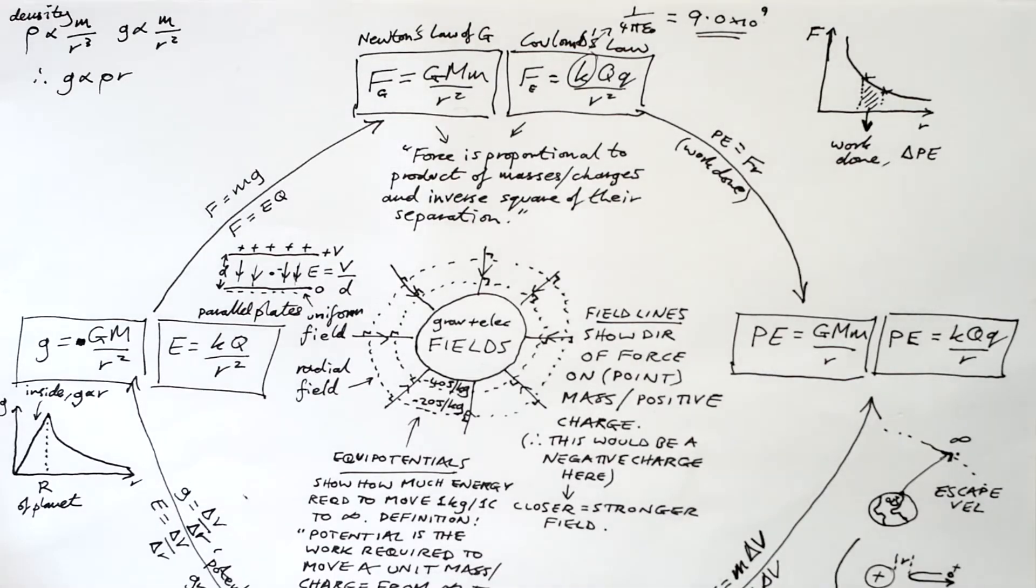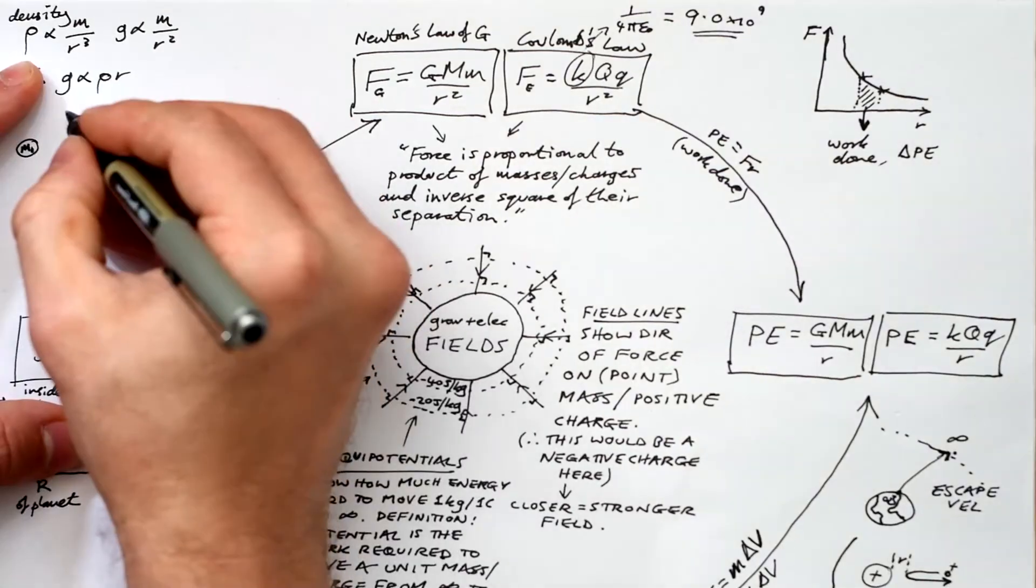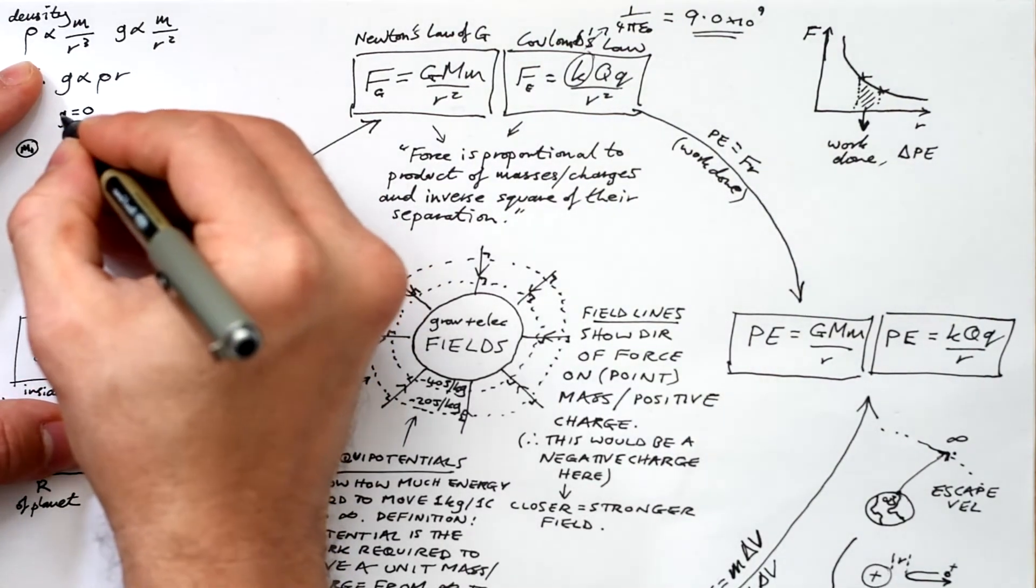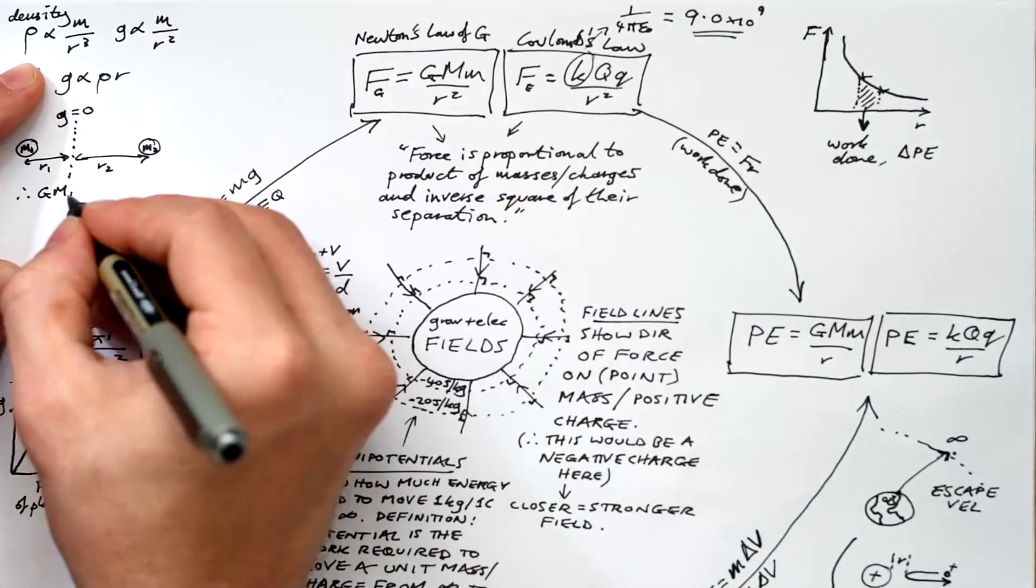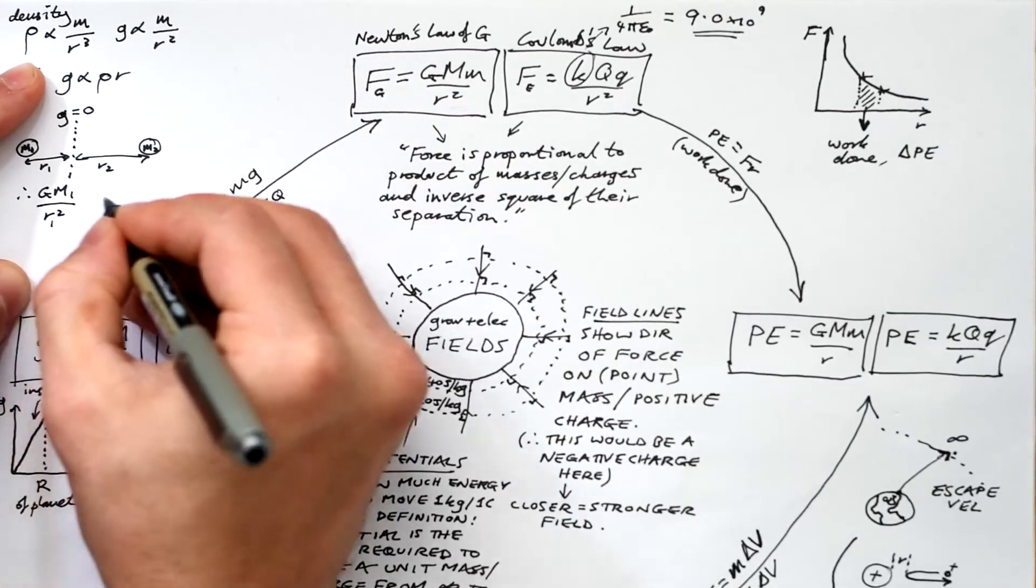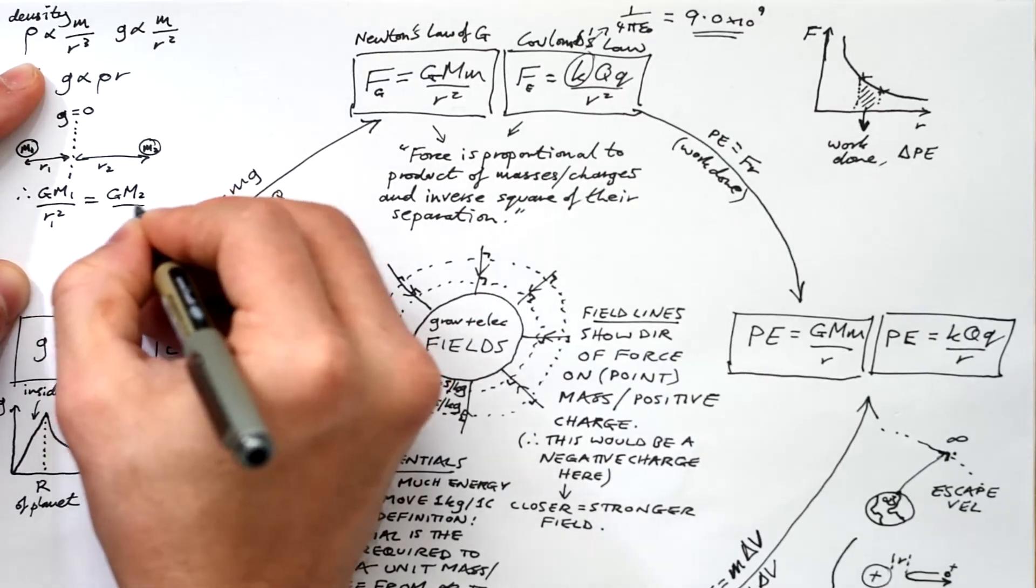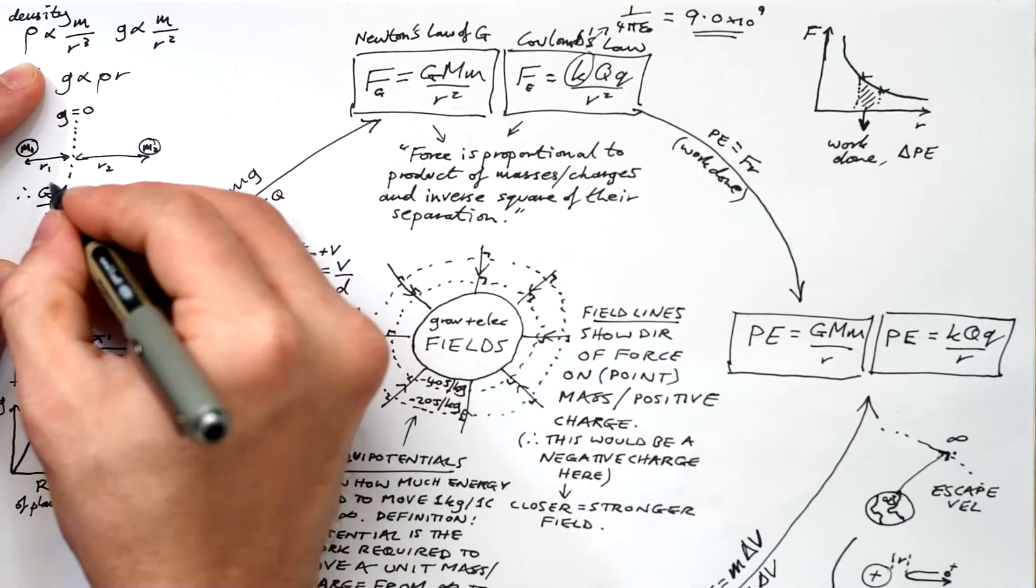I've seen that crop up in multiple choice questions. This question crops up all the time. If we have two masses, then somewhere in between the resultant field strength is going to be equal to zero. We can say that the field strengths at that point are equal and opposite. So we can say that Gm over r squared equals Gm over r squared, and G's cancel. That's how you find the resultant field strength.